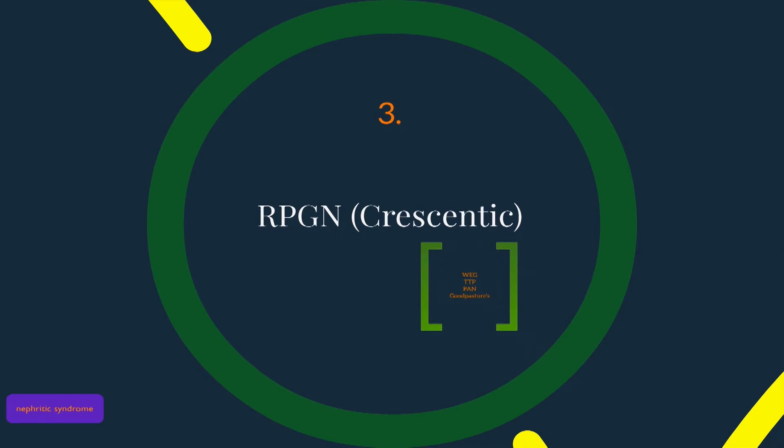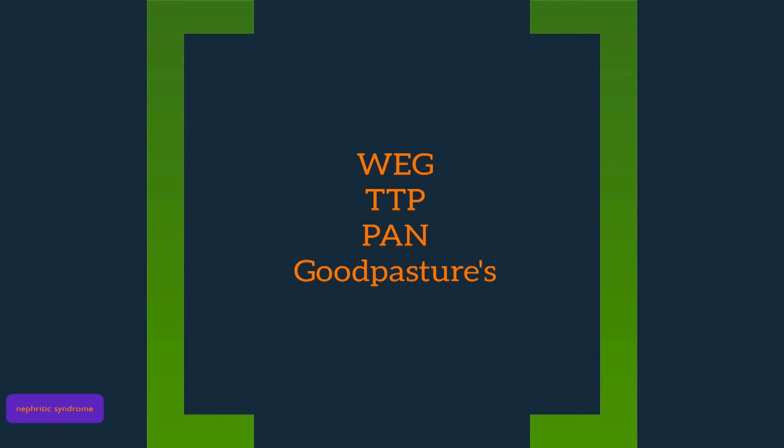So to say that again, in a patient who presents with rapidly progressive glomerulonephritis, if a kidney biopsy were done, one would see crescents. The major causes of crescentic or rapidly progressive glomerulonephritis include Wegener's granulomatosis, TTP, polyarteritis nodosa, and Goodpasture's.